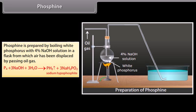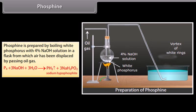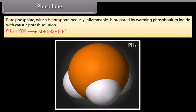Phosphine is prepared by boiling white phosphorus with 4% NaOH solution in a flask from which air has been displaced. Impure phosphine contains considerable amounts of H2 and P2H4 and is inflammable in air, bursting into flames on contact with air and forming vortex rings of P4O10. Pure phosphine, which is not spontaneously inflammable, is prepared by warming phosphonium iodide with caustic potash solution.